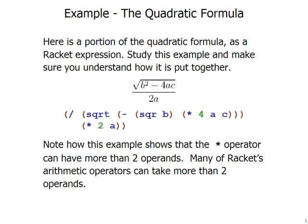So the division sign, which we represent in Racket as a forward slash, comes first, followed by the numerator and then the denominator.